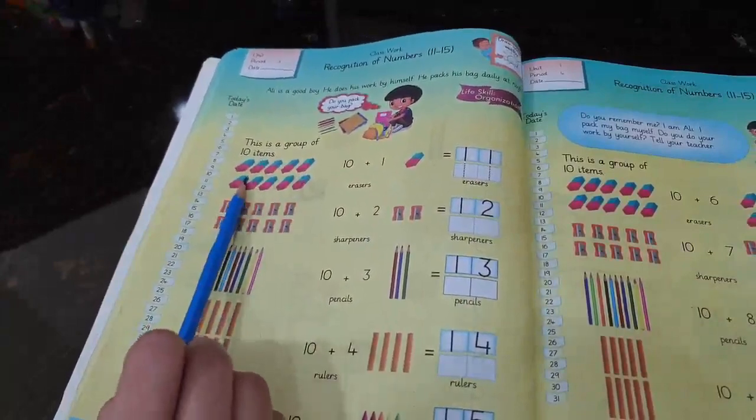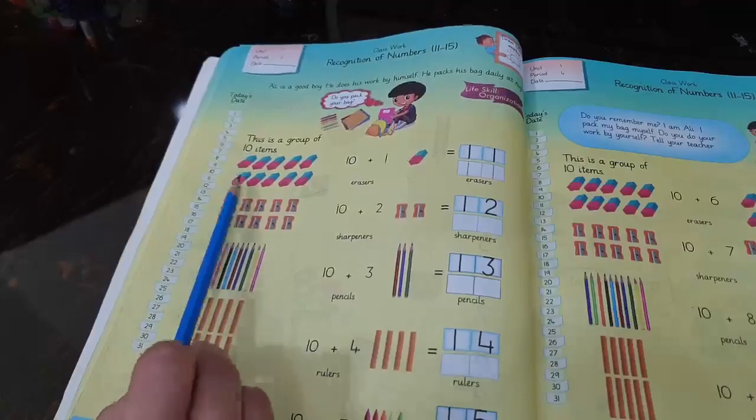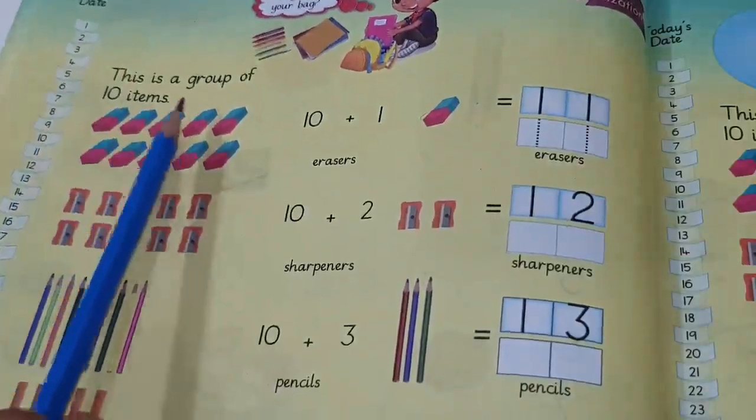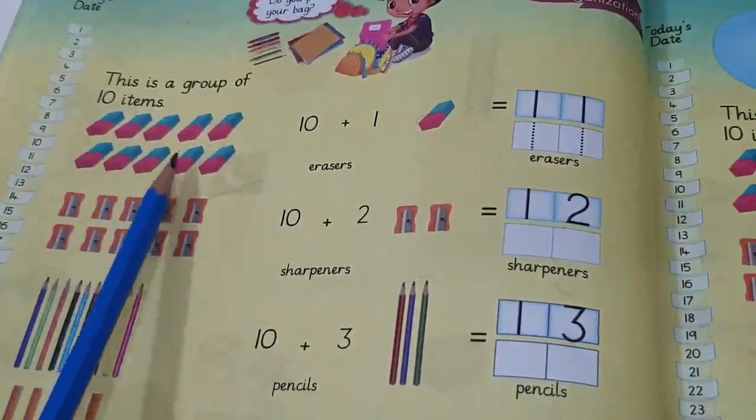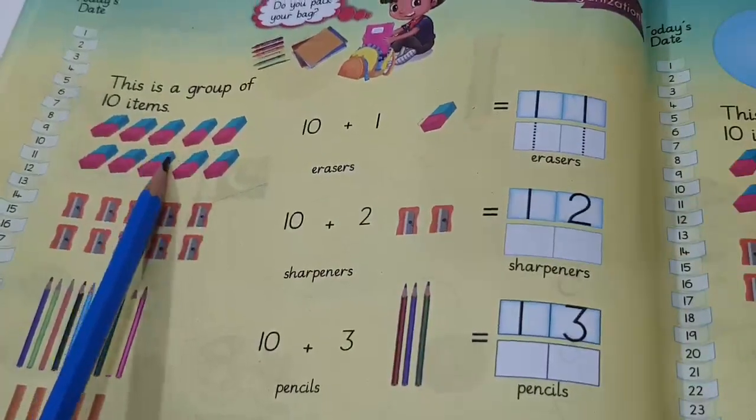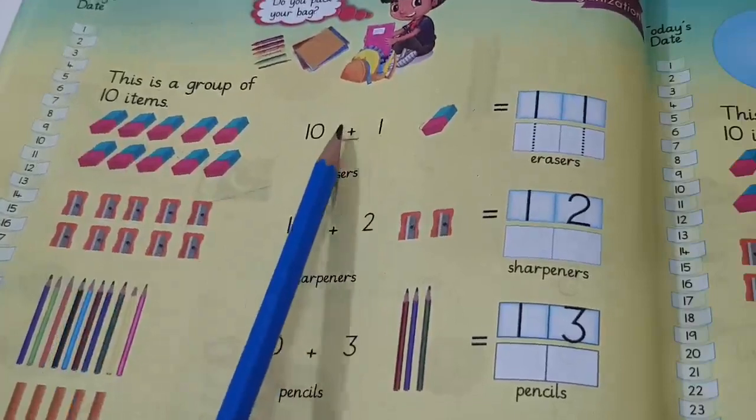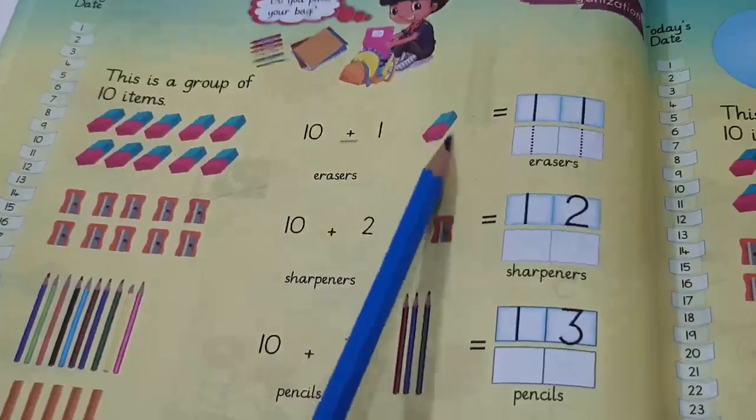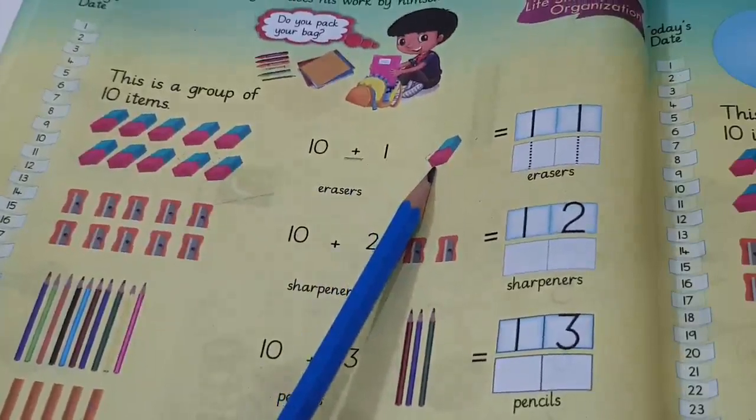What are these? These are erasers, blue and pink erasers. Let's count with me. One, two, three, four, five, six, seven, eight, nine, ten. That means you are having 10 erasers. Okay, what we have to do is, we have to add. We have to add these erasers among these. How many erasers are there? Only one.